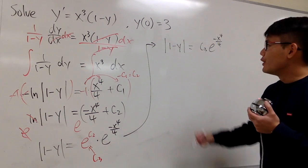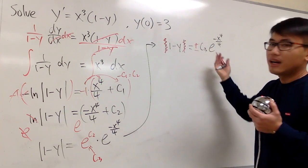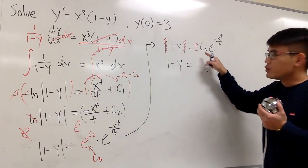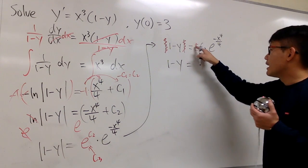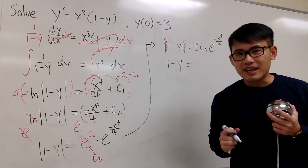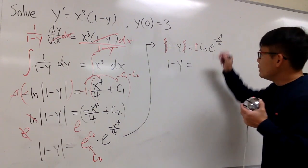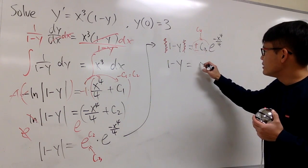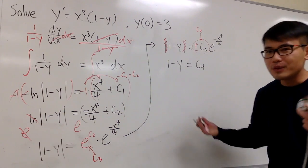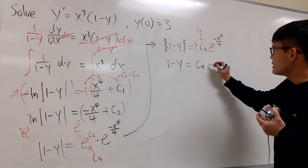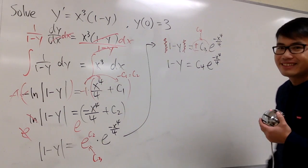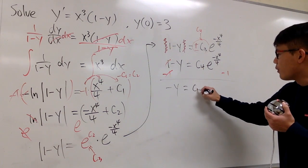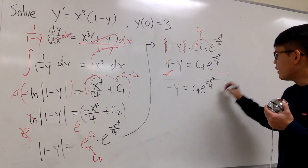To get rid of the absolute value, we put a plus or minus on the right-hand side. On the left we have 1 minus y. On the right, positive c3 or negative c3 — it doesn't really matter, since both are constants. We might as well call the whole thing c4. So 1 minus y equals c4 times e to the negative x to the fourth power over 4. Next, subtract 1 from both sides and we get negative y equals c4 times e to the negative x to the fourth power over 4, minus 1.